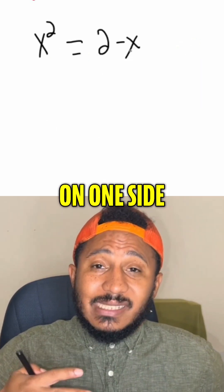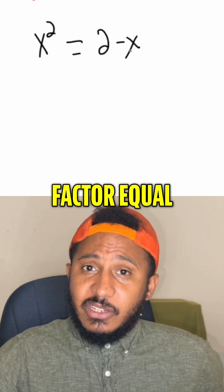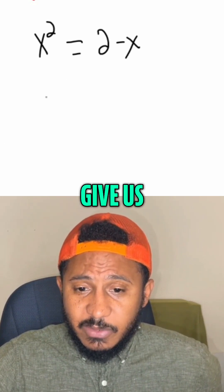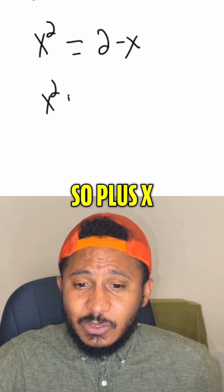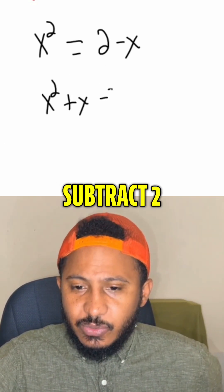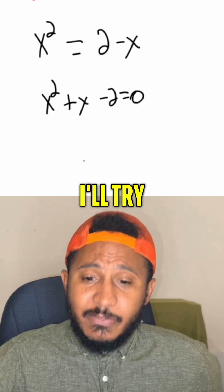Now it's quadratic, so we get 0 on one side, factor the other side, set each factor equal to 0. So that would give us x squared, if we add x, so plus x, subtract 2 equals 0. And now I'll try factoring the other side.